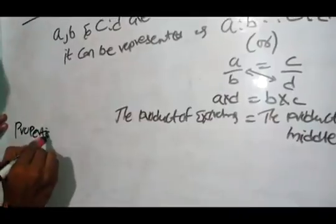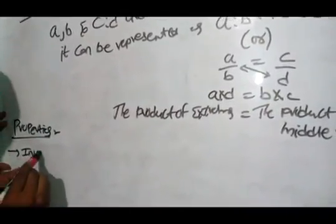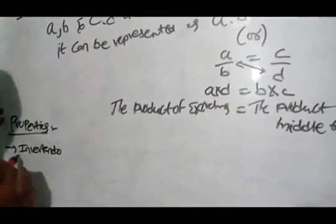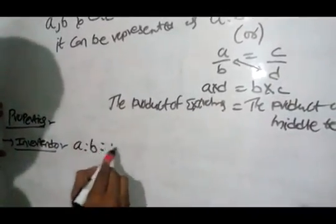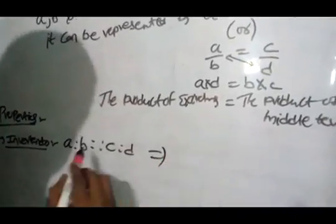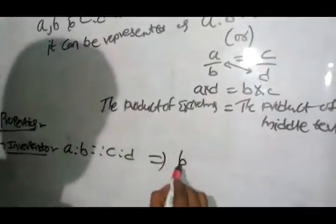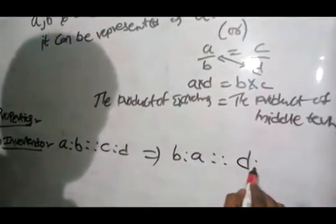Here the properties have to be there. First one is invertendo. If a is to b equal to c is to d, then the invertendo will be - it can be reversed - that means b is to a equal to d is to c.